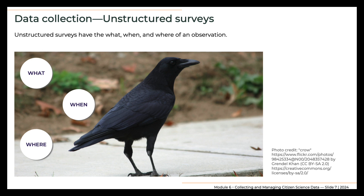This information is referred to as metadata. For instance, somebody might see a crow on a walk around their neighborhood. They might make a note of the what — an American crow — the when — the time and date — and the where — an address, a park, or even a GPS point. This observation or data point is considered unstructured because it is opportunistic. And by itself, this sighting of a crow is not exceptionally useful because it lacks context.